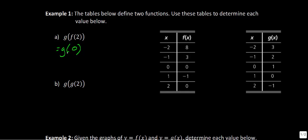Now we're left with g of 0. We take our input value of 0, put it into the function g of x, and we get an output value of 1. So it's just that simple.